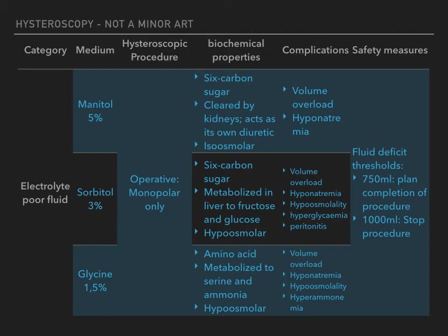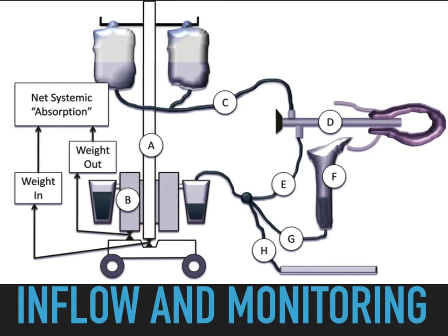The electrolyte-poor fluids most commonly used for hysteroscopy are 1.5% glycine, 3% sorbitol, and 5% mannitol. All electrolyte-poor fluids used in hysteroscopy can lead to hyponatremia if a large volume is absorbed. Mannitol differs from the others because it is isoosmolar but is not commonly used because it is not available in 3L bags typically used for hysteroscopy. In order to avoid hyponatremia and fluid overload, it is important to monitor the fluid deficit, which is essentially the difference between the fluid instilled and the fluid collected from the outflow — the net systemic absorption.